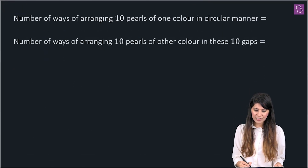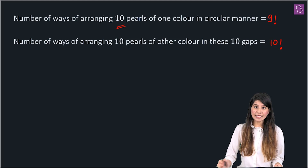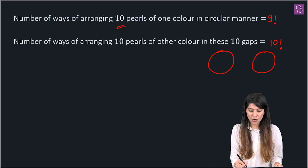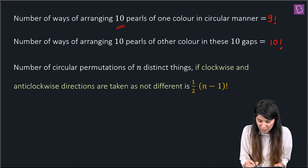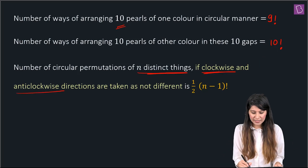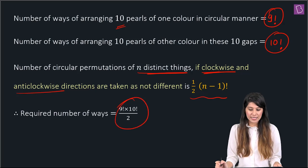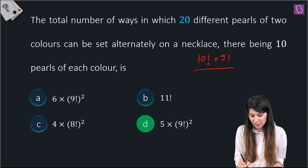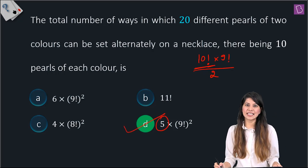For a necklace, the front and back look the same, meaning clockwise and anti-clockwise arrangements are one and the same. So we divide by 2. The number of circular permutations of n distinct things when clockwise and anti-clockwise are not different is (n−1)!/2. So the arrangement of 10 pearls of one color gives 9!/2, and the total is (9! × 10!) / 2. Simplifying: 9! × 5, so the answer is 5 × 9 factorial — option D is correct.